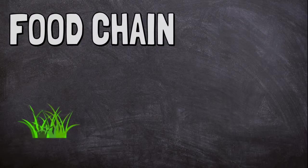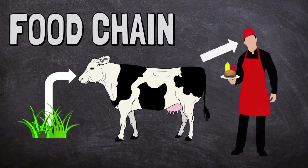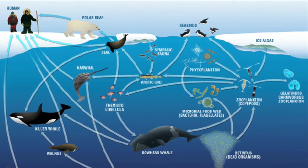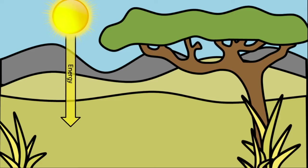There are many different food chains on earth, and even food webs, which are more complicated than food chains. Here is a good example of a simple food chain. Sun shines on the African grasslands, and the grass gets its energy from the sunlight.